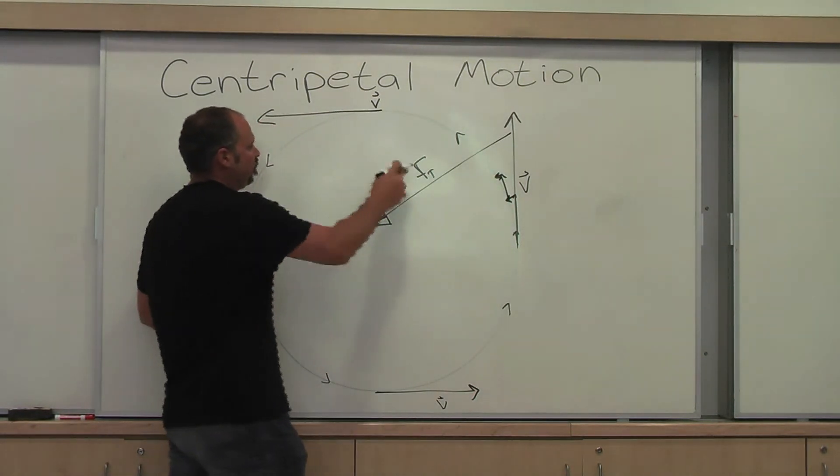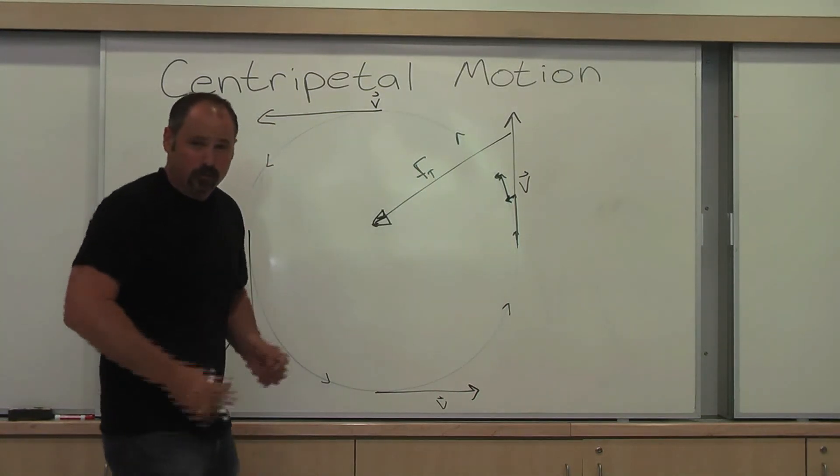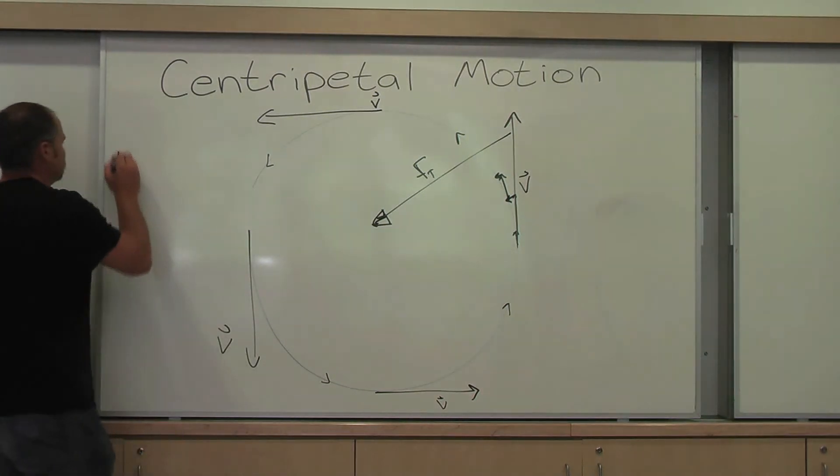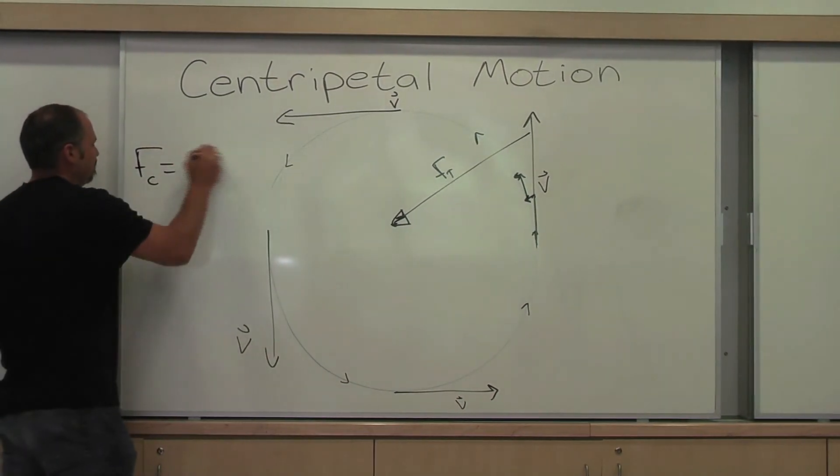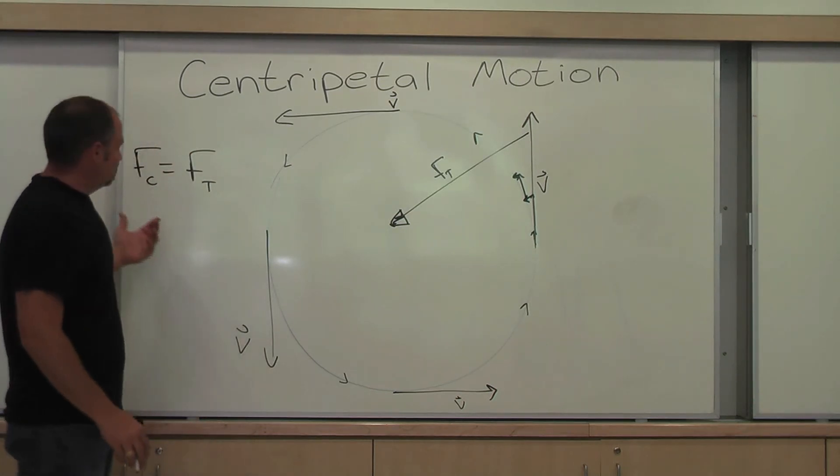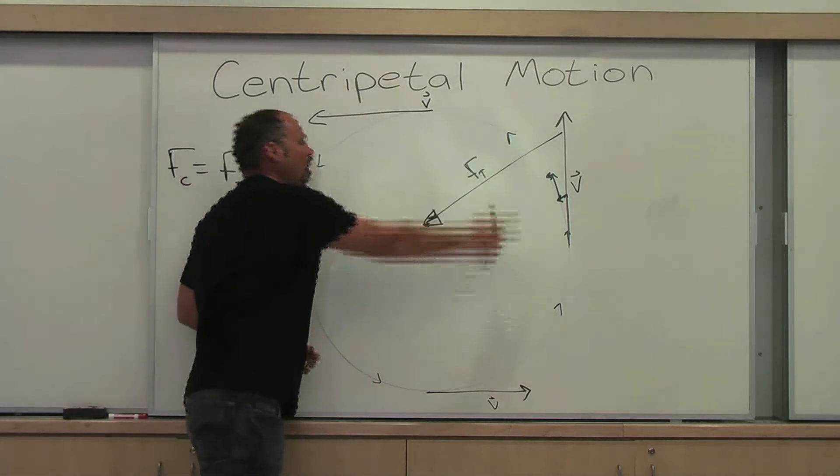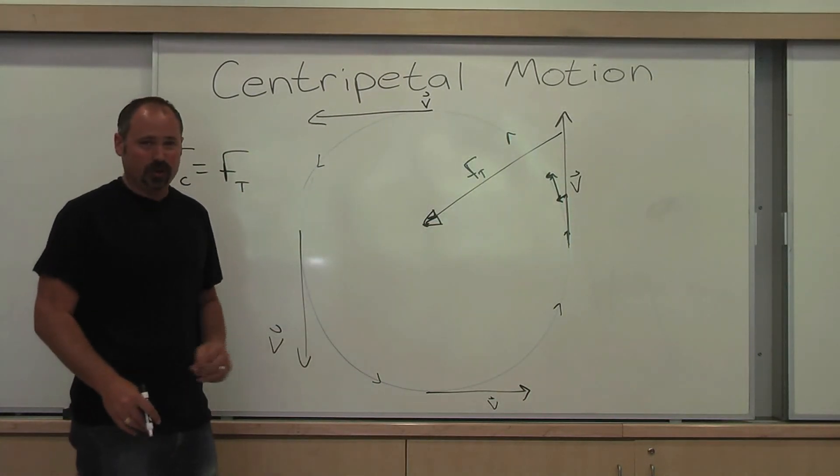So this force of tension, which is the centripetal force in this case, centripetal force happens to equal the force of tension here, but it can equal many things. It's an umbrella term for any force that causes the object to undergo centripetal motion.